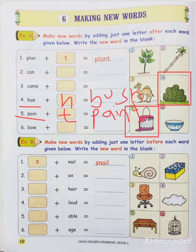What is the sixth one? Bow — B, O, W. Arrow and bow, you know. This is also a word. What is in the picture? Bowl. So what is the spelling of bowl? B, O, W, L. By adding L here, which word do we get? B, O, W, L — bowl. By adding the letter L at the end, we get the new word: bowl.